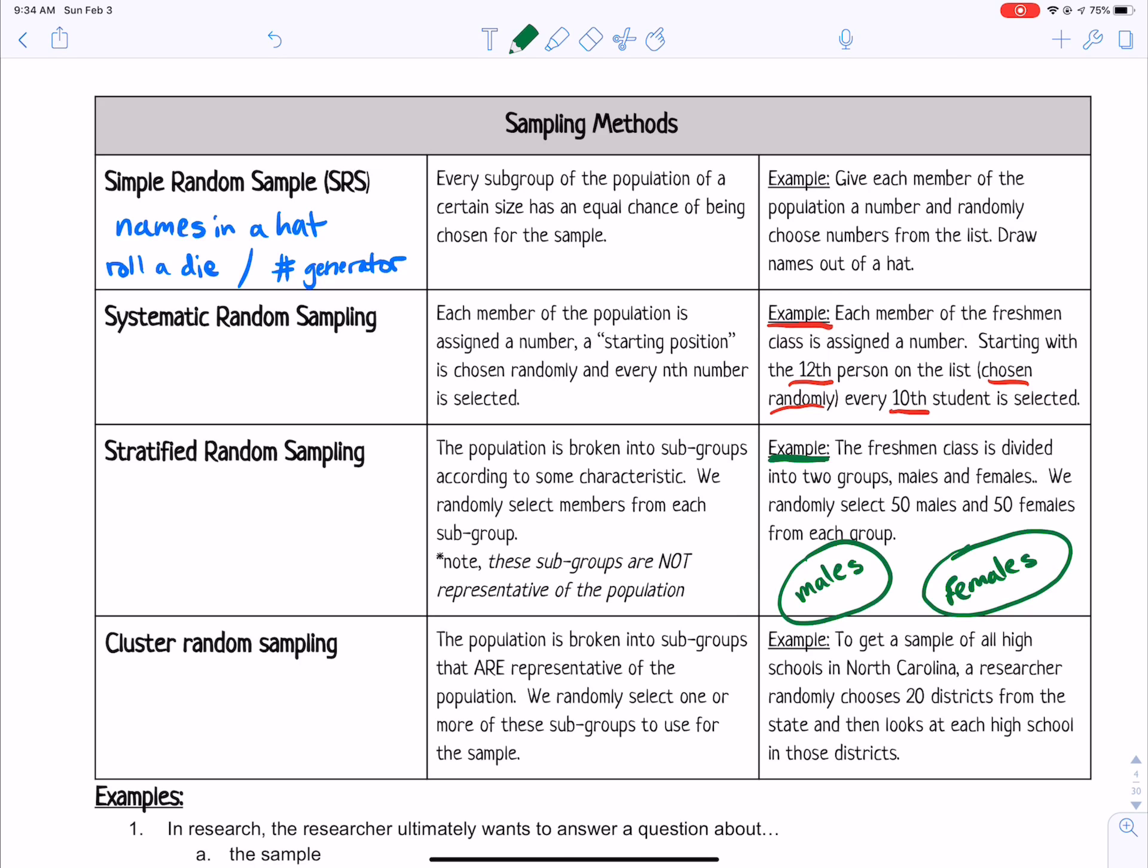And we randomly select 50 males and 50 females. So 50 males are chosen from that group and 50 females are chosen from that group. That would be stratified.